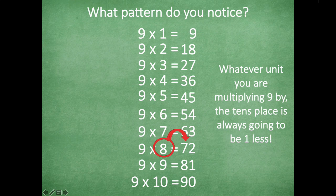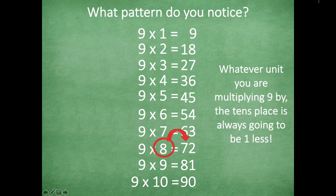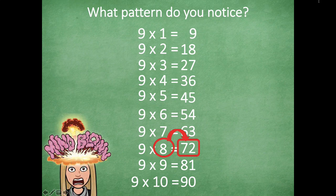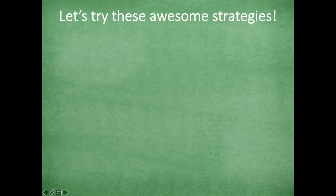Let's jump to eight: one less than eight is seven. So for nine times eight, I know the tens place is seven. I just have to figure out what number plus seven makes nine — and seven plus two equals nine. So seventy-two equals nine times eight! That blows my mind even more — that's pretty awesome!